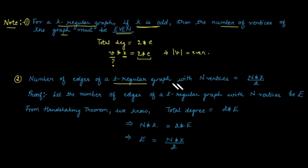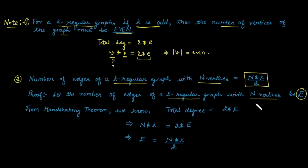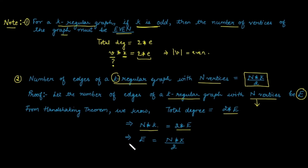A second result: the number of edges in a k-regular graph with n vertices is equal to n × k / 2. By the handshaking theorem, the total degree equals 2 times the number of edges e. With n vertices each of degree k, the total degree is n × k = 2e, so e = n × k / 2.